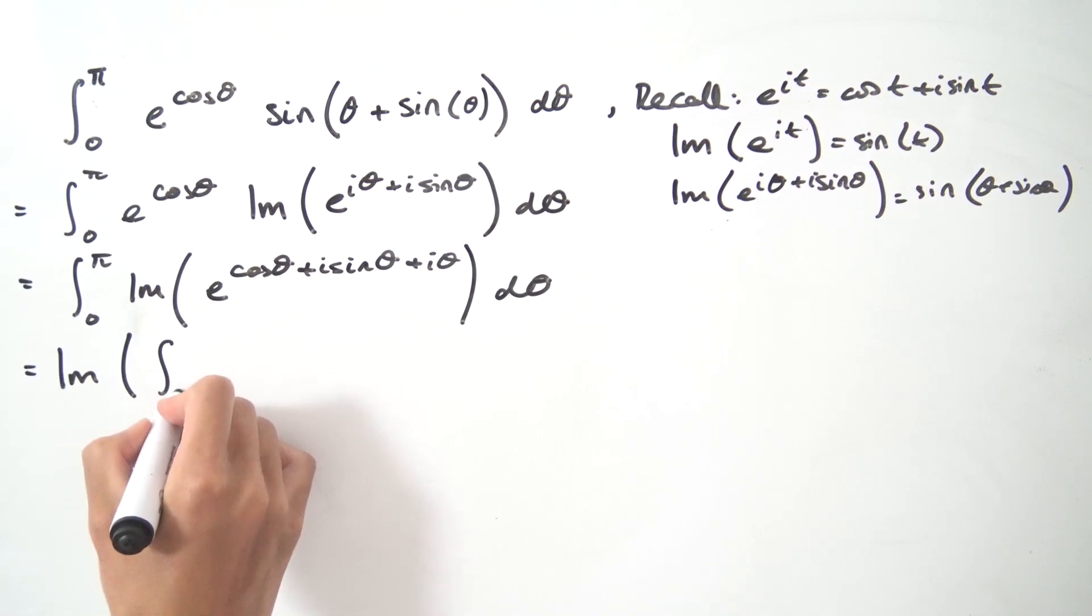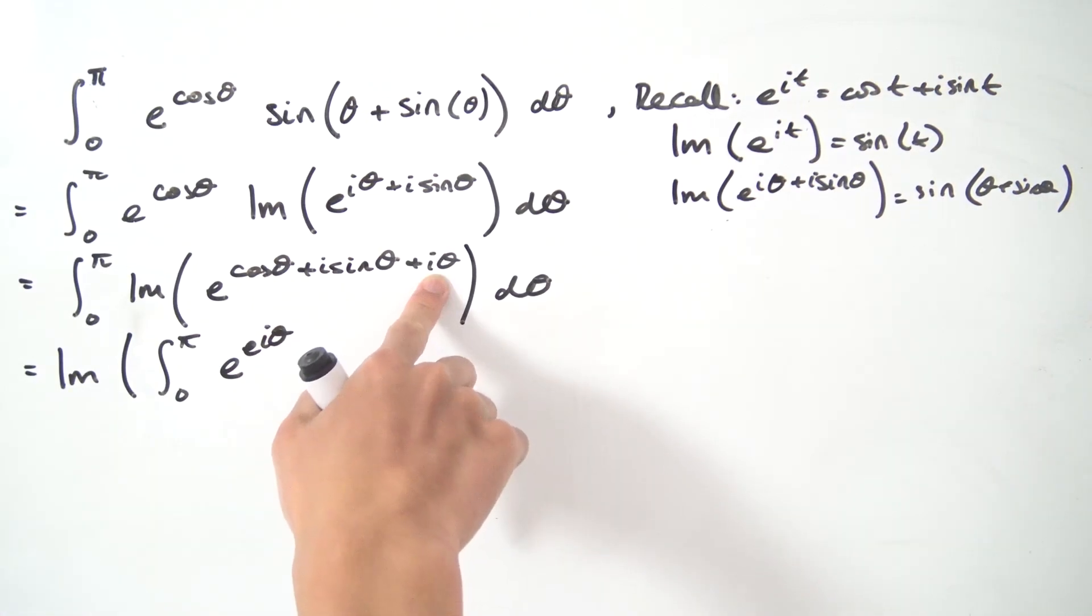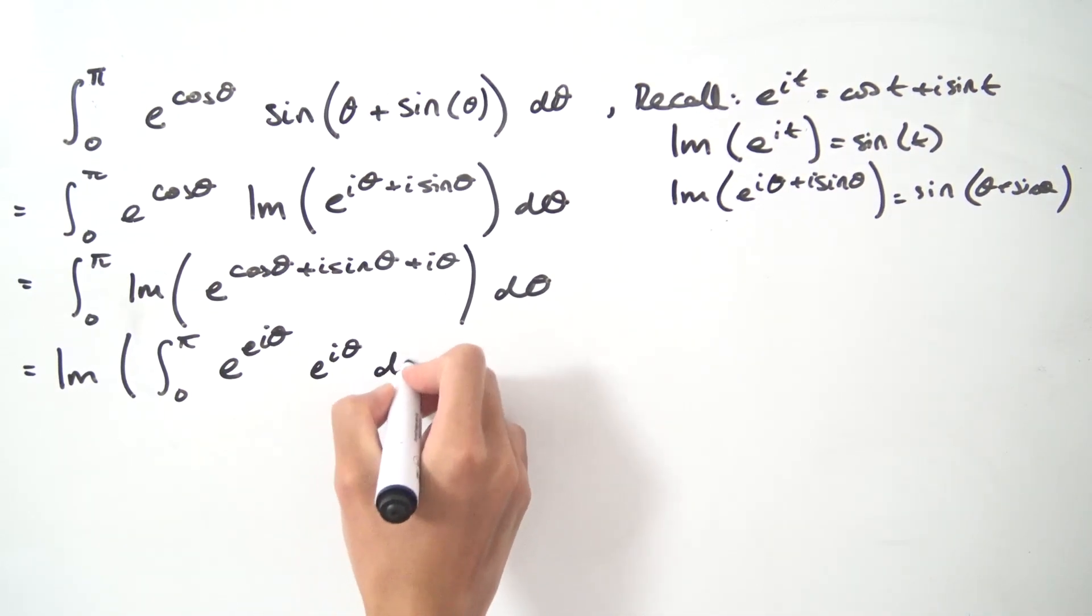We have the imaginary part of the integral from zero to pi of e to the e to the i theta, so we have E inside of an E, and then for this i times theta I'm going to split it off into its own little thing, so it's going to become e to the i theta, and then integrate with respect to theta.